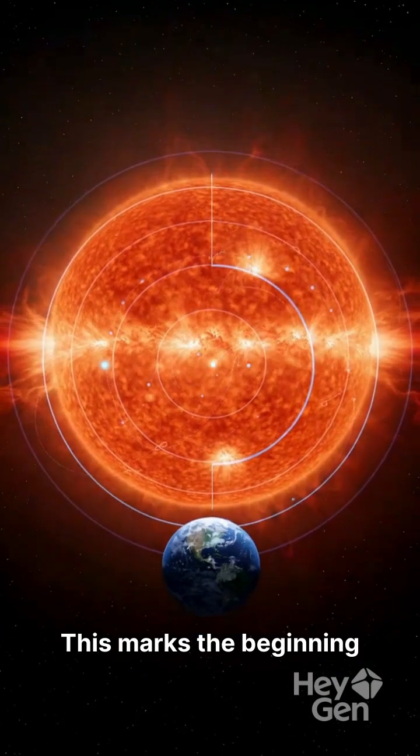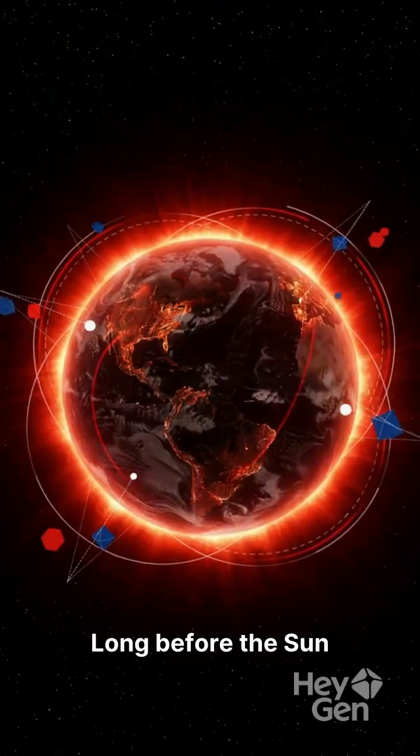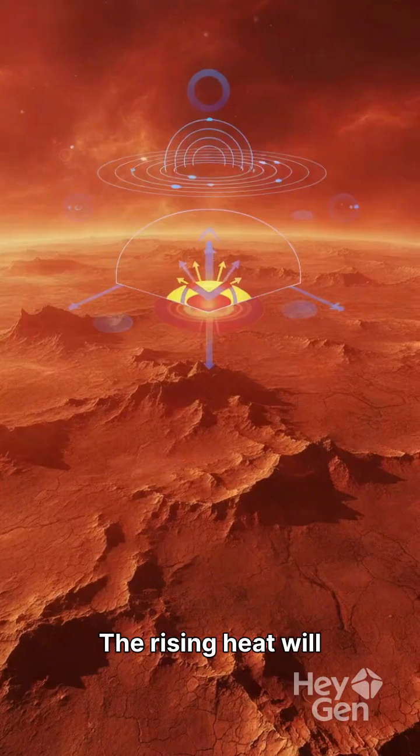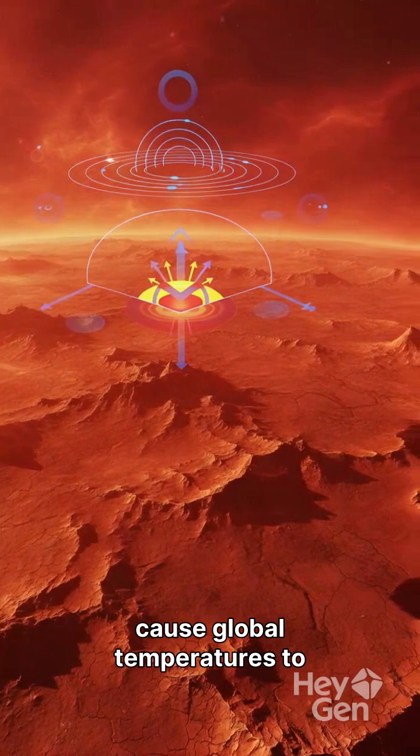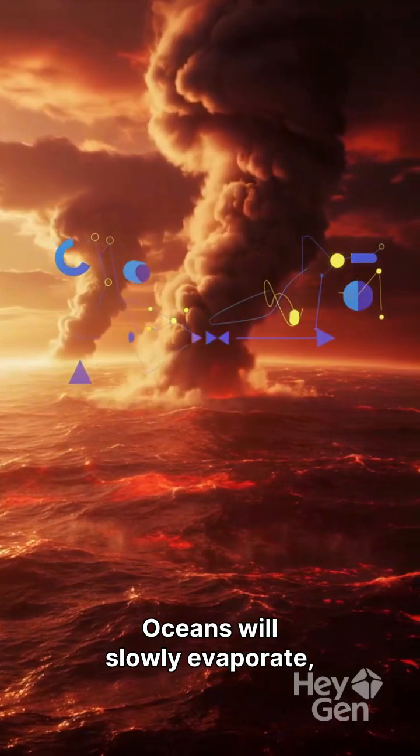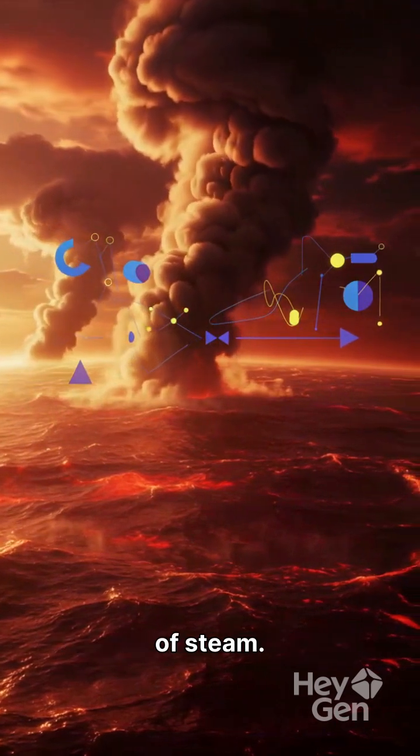This marks the beginning of the end for Earth. Long before the Sun becomes a true red giant, Earth will already start to suffer. The rising heat will cause global temperatures to increase dramatically. Oceans will slowly evaporate, turning into thick clouds of steam.